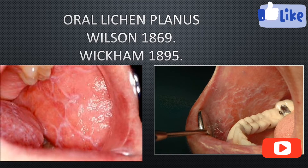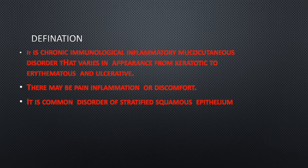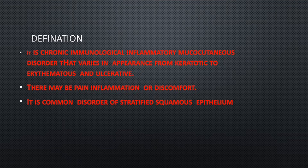Oral lichen planus is defined as a chronic immunological inflammatory muco-cutaneous disorder that varies in appearance from keratotic to erythematous and ulcerative. It is a chronic disease occurring over a long duration of time, mostly affecting muco-cutaneous sites like mucous membranes and skin. Its appearance can vary from keratotic — involving dead cells — to erythematous red patches, or ulcers with pain, inflammation, and discomfort. It is a common disorder of stratified squamous epithelium.